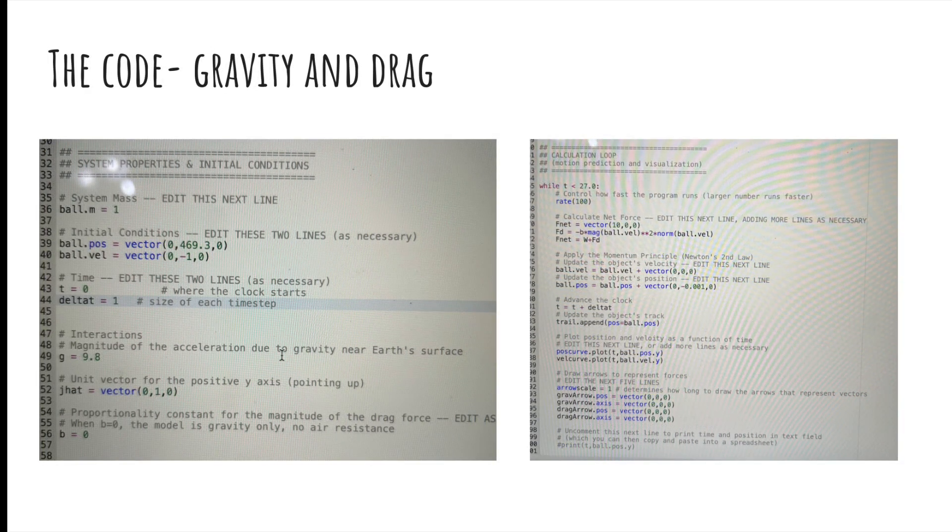For the computational model that took into account the force of gravity and drag, I have almost the same code as the previous slide, with some changes to the proportionality constant, which I found by trying different numbers until the endpoint of the model was about the same as my observed data. Also, I have the formula for drag force here, which is combined with the force of gravity to find the net force.